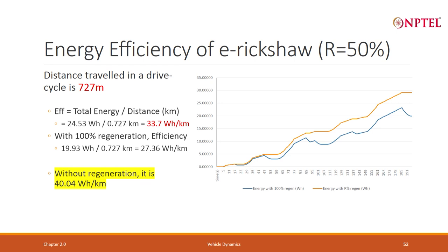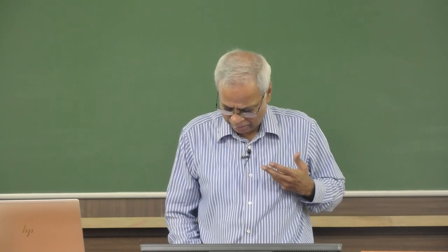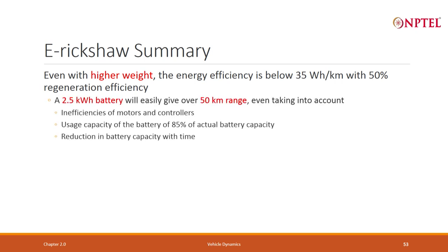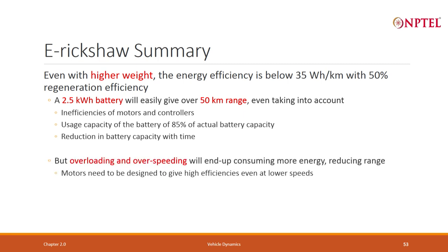This is what an e-rickshaw consumes — it is a slow-moving vehicle, which explains the numbers. E-rickshaw summary: even with its higher weight, the energy efficiency is below 35 Wh/km with 50 percent regeneration. With a 2.5 kWh battery and consuming only 35 Wh/km, it can easily give 50 km of range, even accounting for only 85 percent of battery being usable. Of course, battery capacity reduction over time means the 50 km range will slowly come down, and overloading or over-speeding will always hurt the range.